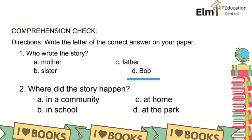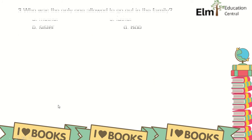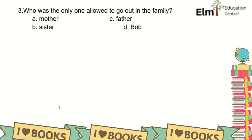Where did the story happen? In a community? In a school? At home? At the park? It's in the community. Number three: Who was the only one allowed to go out in the family? A. Mother, B. Sister, C. Father, D. Bob. The answer is C, Father.